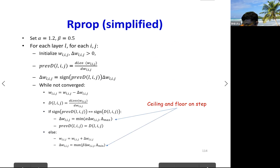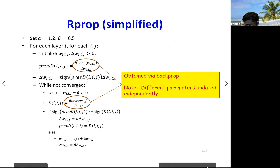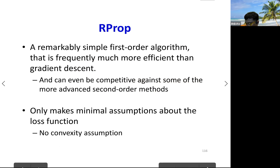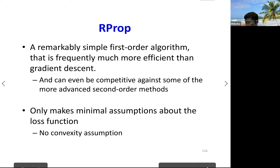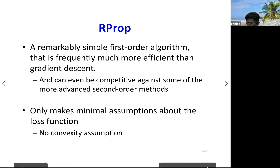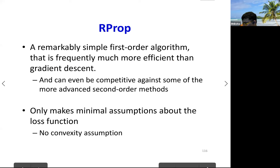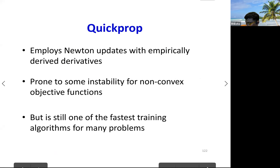Here is the pseudo code for RProp — please look it over on the slides. It's a remarkably simple first-order algorithm that is frequently much more efficient than gradient descent and can be competitive against even some more advanced second-order methods, making minimal assumptions about the loss function. There's a similar algorithm called QuickProp which I won't detail here, but it's also on the slides.